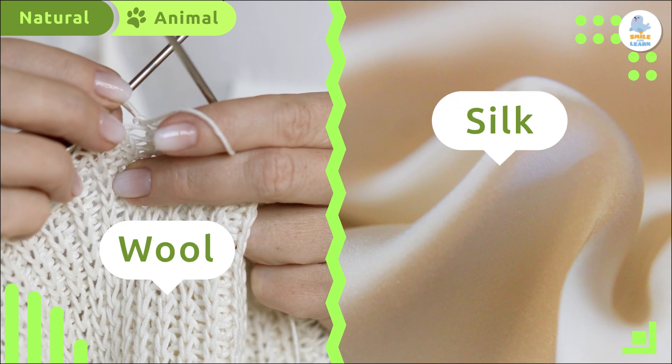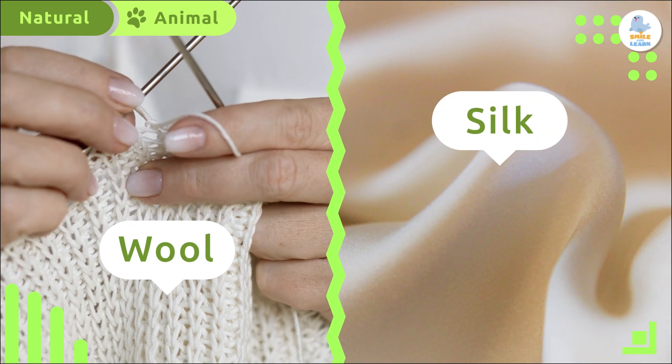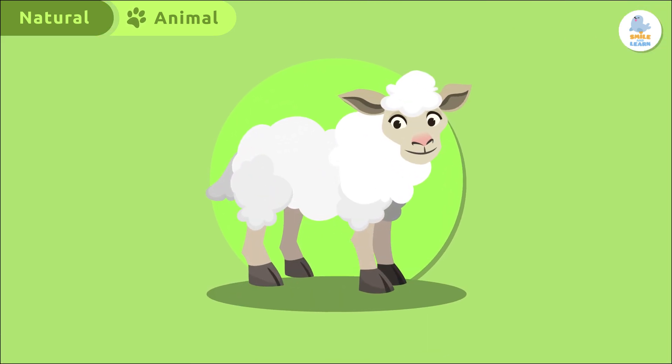Like wool or silk come from animals. Have you ever thought about where the wool used to make your sweaters comes from? Of course, it comes from the wool of a sheep.